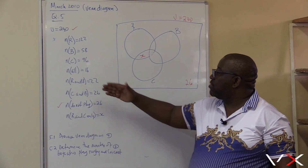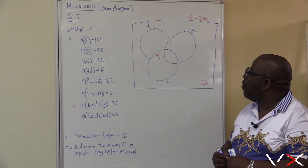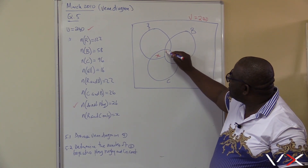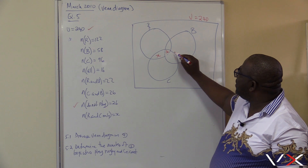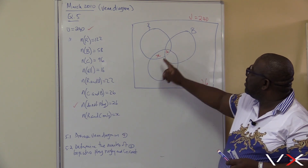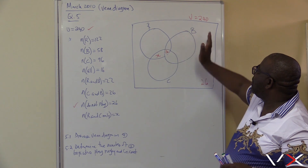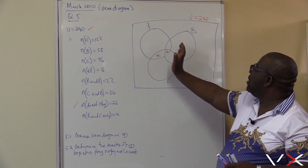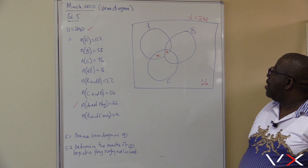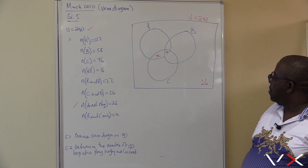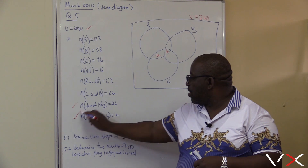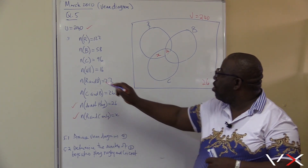We're supposed to start with all three. What is all three? It is 16. This is where the 16 goes — the intersection for all three sports. The 16 is for cricket, the 16 is for basketball, and the 16 is also for rugby. So we've done all three.